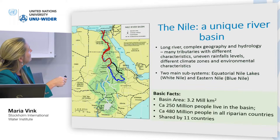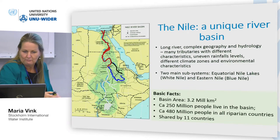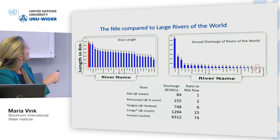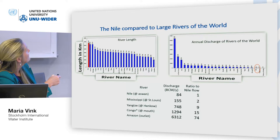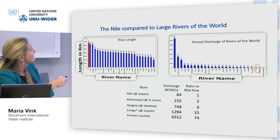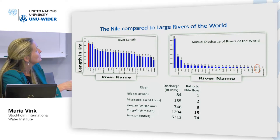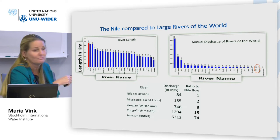We also have other tributaries — it's really complex, with lots of water coming in from different directions. Comparing it to other big international rivers, the Nile is the longest, but when it comes to the amount of water, it's like a tiny little stream compared to the Amazon. So it's very long and actually has very little water.